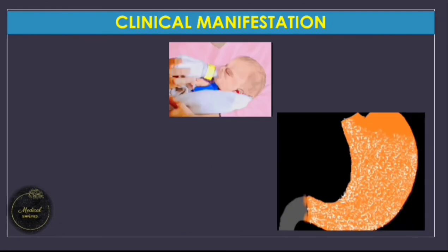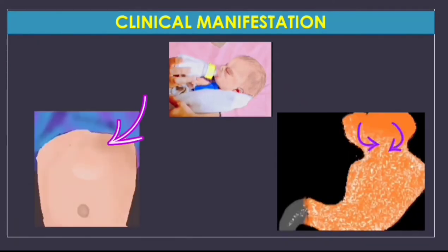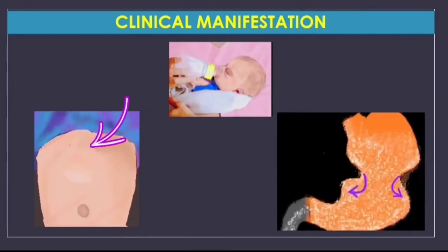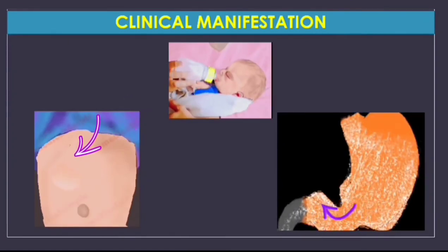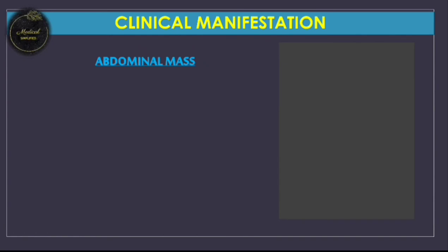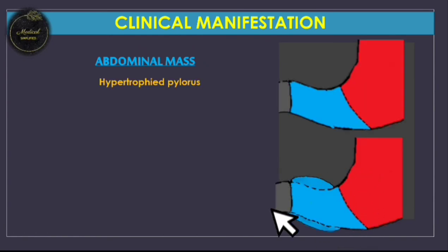An abdominal moving mass can be seen when the baby feeds. In a hospital setting, it is useful to give the baby a test feed and watch. As the stomach tries to push food through the stenosed passage, a peristaltic wave can be seen moving from the left upper abdomen across to the right, making the diagnosis quite clear. Another important clinical tool is palpation of a mass in the abdomen, formed due to the hypertrophied pylorus.